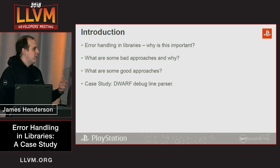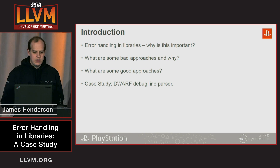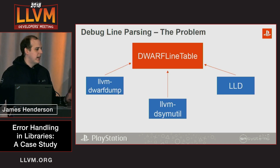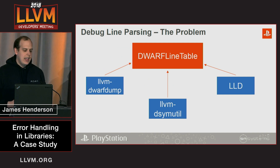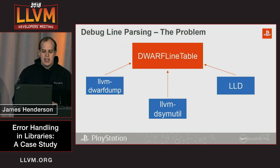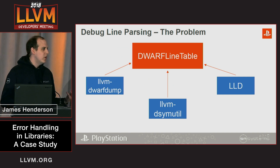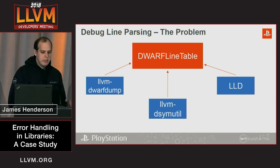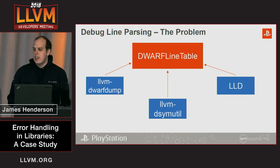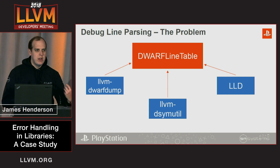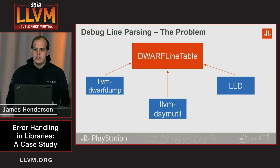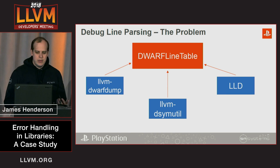Let's outline the problem. Here is the Dwarf line table class. It is part of the Dwarf debug info library and it's got multiple users — for example, DwarfDump, Dsimutil, and LLD. Each of these users have different requirements. For example, they might want to treat warnings as errors, or they might want to print warnings and errors in a different format.